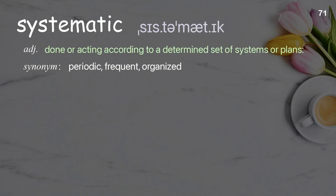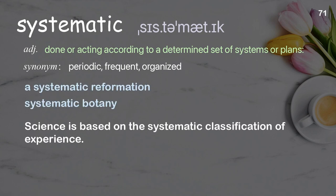Systematic: Done or acting according to a determined set of systems or plans. Examples: A systematic reformation. Systematic botany. Science is based on the systematic classification of experience.